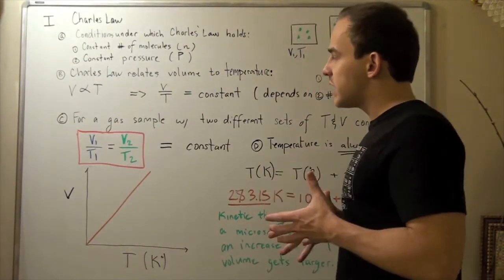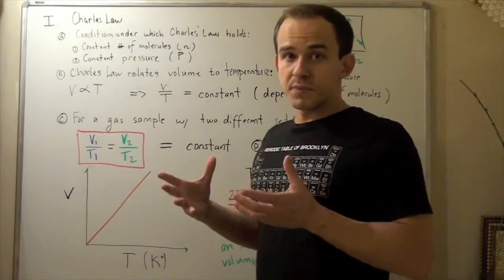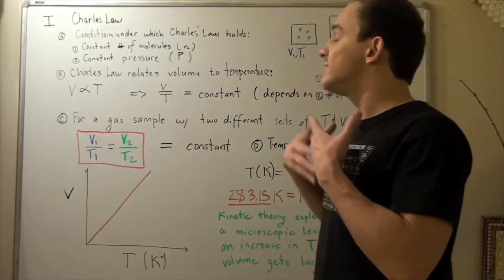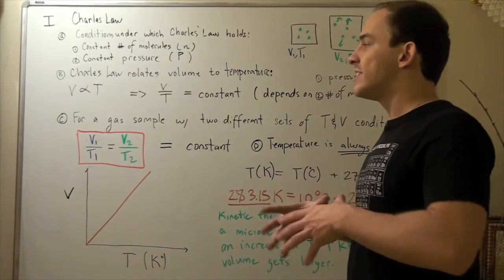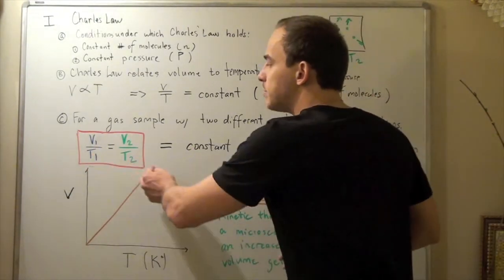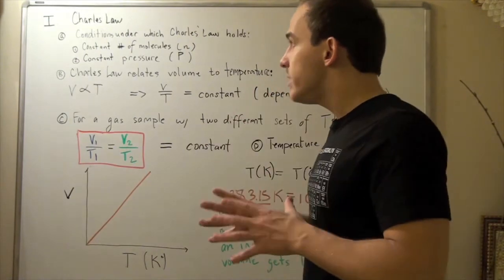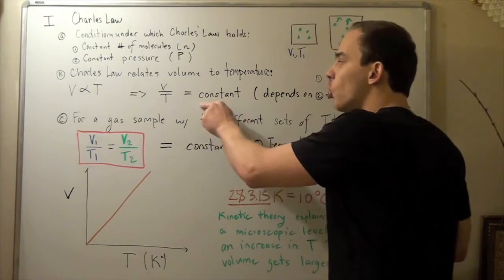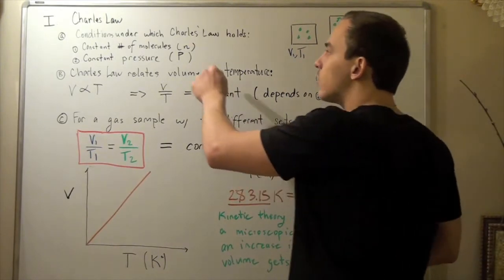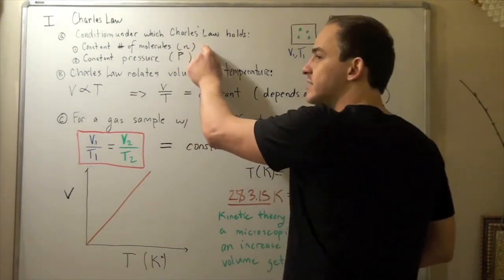Suppose I have some gas system, and I have two sets of different conditions for this gas system. I can relate them in the following manner, assuming that these guys are both constant. In other words, note that the constant always stays the same when our pressure and number of moles stay the same.